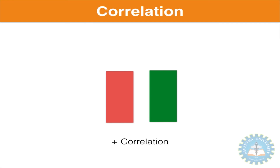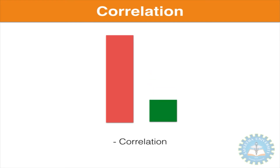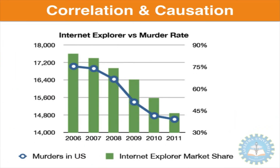You could also have a negative correlation, wherein as the red bar goes up, the green bar comes down. You should always remember that correlation does not mean causation. Just because there is a correlation between two parameters, it does not mean that one parameter causes the other to move. This is a graph comparing the murder rate and the usage of Internet Explorer. You can see a perfect correlation — as Internet Explorer usage goes down, murder rate also goes down. Does this mean Internet Explorer caused murders? Certainly not. That is why you should never confuse correlation with causation.